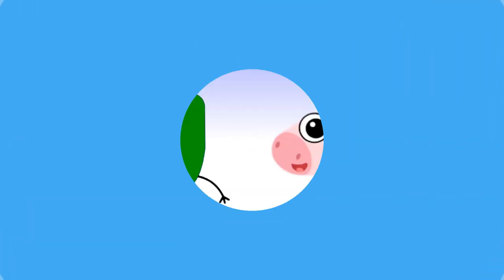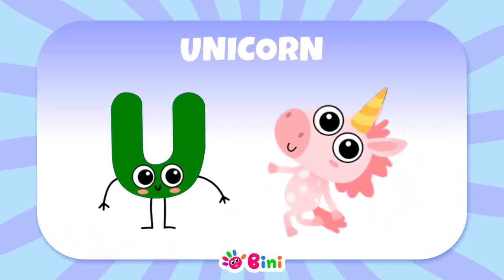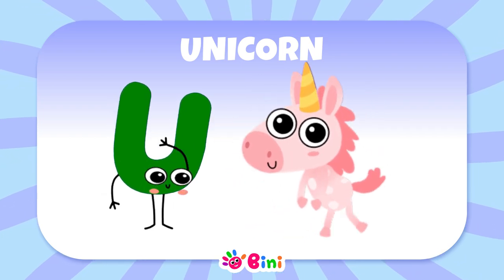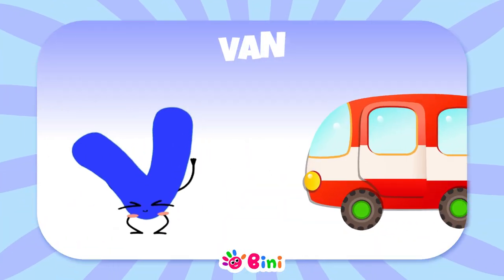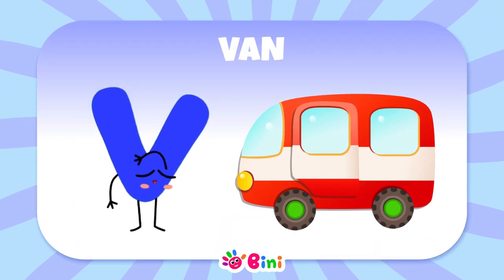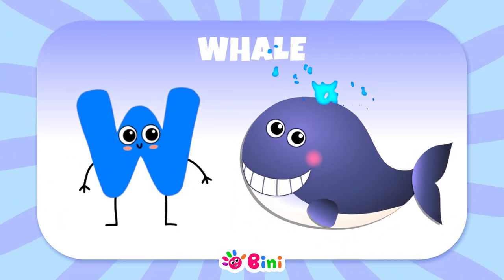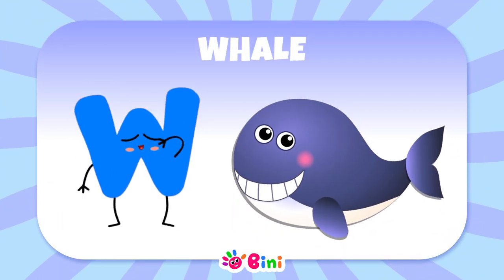The word unicorn begins with the letter U. The word van begins with the letter V. The word whale begins with the letter W.